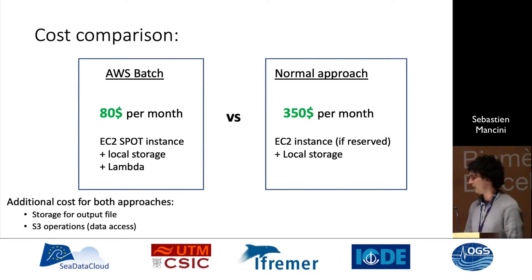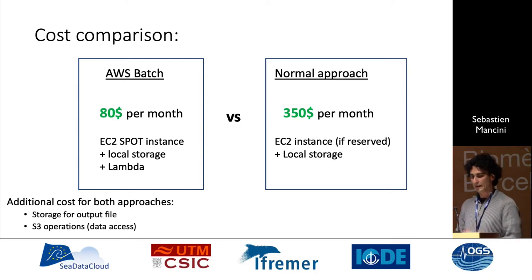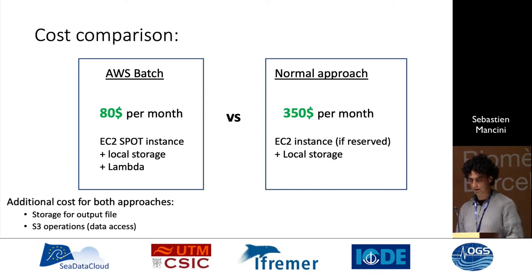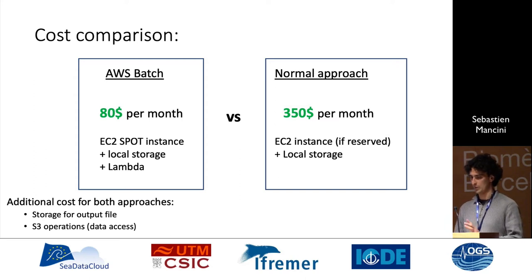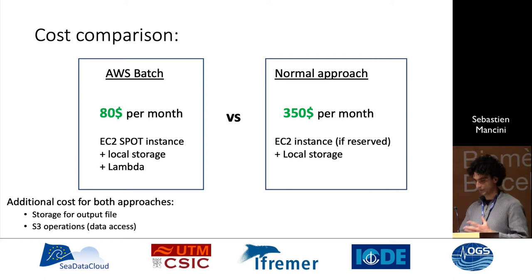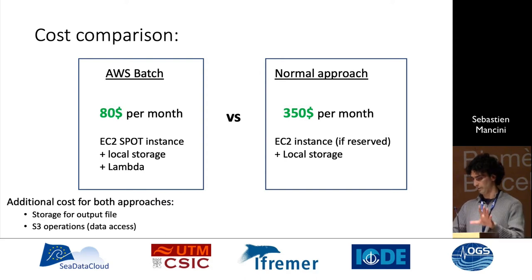Another aspect of moving to the cloud was cost comparison — and yes, it is less expensive. With AWS Batch we're paying about $80 per month for EC2 Spot instances, local storage, and Lambda, of which probably $50 is storage. With the normal approach of a reserved instance that you know you'll use for a year, you'd be paying roughly $350, and even more if you don't reserve them.